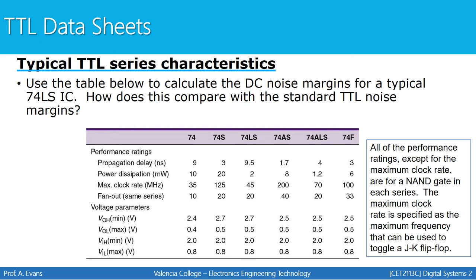Next, we'll calculate the DC noise margins for a typical 74LS IC and compare with the standard TTL noise margins. When we think about the TTL family, the standard TTL has part numbers beginning with just 74. Then there are derivatives: 74S, 74LS, 74AS, 74ALS — all within the TTL umbrella but with different characteristics. Some have better propagation delay, some have better noise margin. We're going to compare the noise margins for the 74LS versus the 74 to see which has a better noise margin.